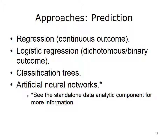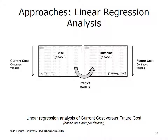Finally, there are various statistical and machine learning methods to develop predictive models for population health. The common methods are regression methods and classification trees. Population health models often attempt to predict an outcome, such as future cost, based on data available in the base dataset. For example, in a simplified model, an analyst may use the current base year's cost to predict the future year's cost. Both of these costs are continuous variables, and log transformations make them more normally distributed. Thus, a linear regression can be the model of choice to explore the effect of current cost on future cost.